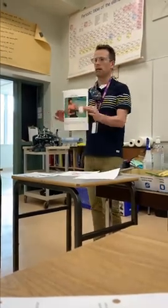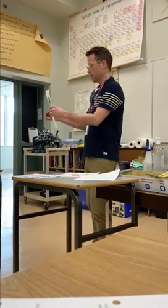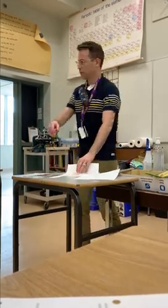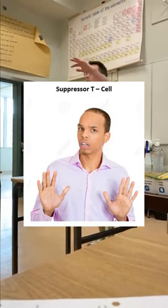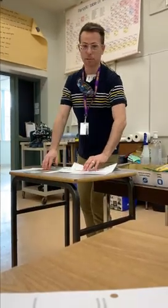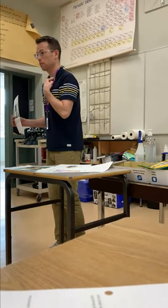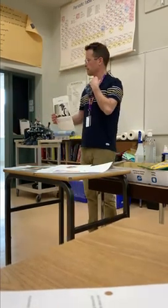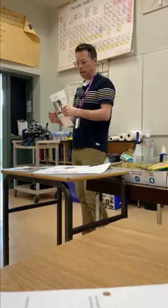The killer T cell goes all out. It needs the suppressor T cell to hold it back and call it off when everything's done. Meanwhile, we also have the memory T cell, which remembers the pathogen's antigen. This antigen is super important because it tells our bodies something's wrong. The memory T cell remembers it for later.